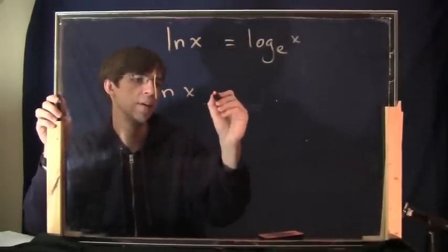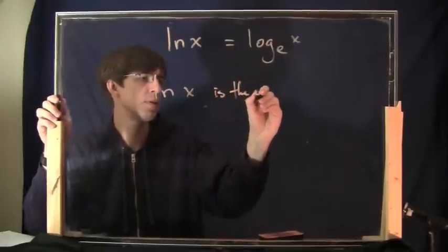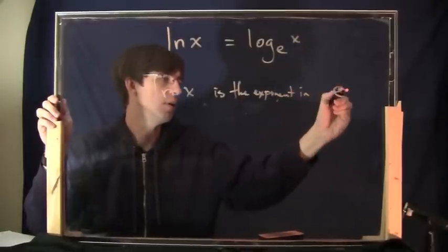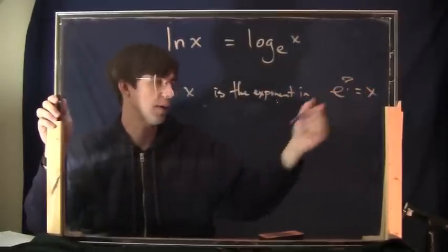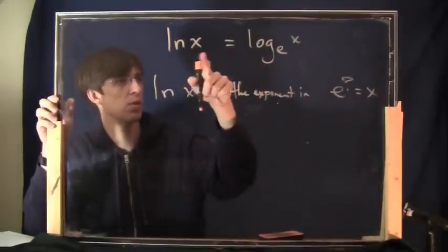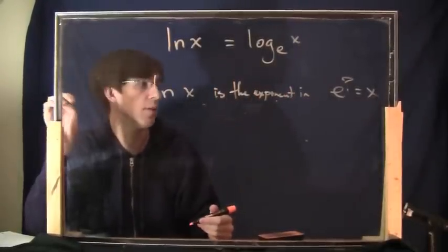So, another way you could say this as a definition of the natural logarithm, ln of x, is the exponent in e to what power equals x. All right. This is, I'm just writing the same definition of logs because the natural log is the logarithm whose base is e.